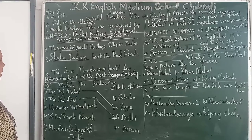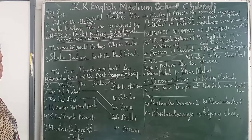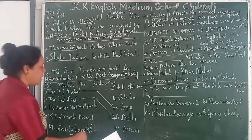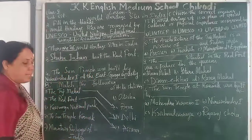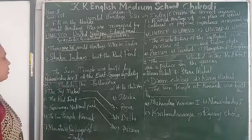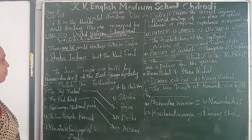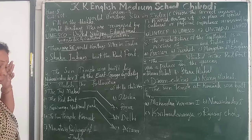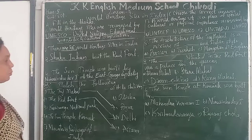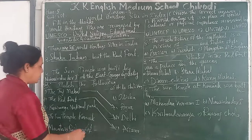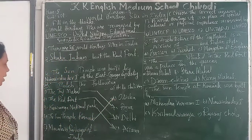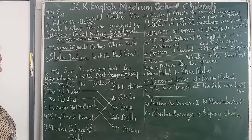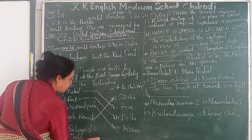Next, Kaziranga National Park is matched to Assam. The Sun Temple Konark is matched to Odisha. Next, the Mountain Railways of India is matched to Hill Station.